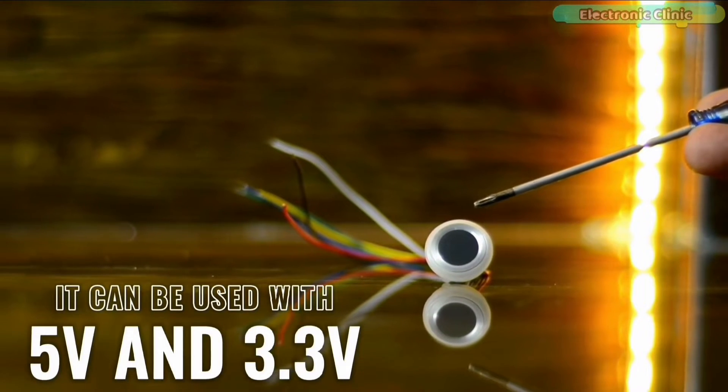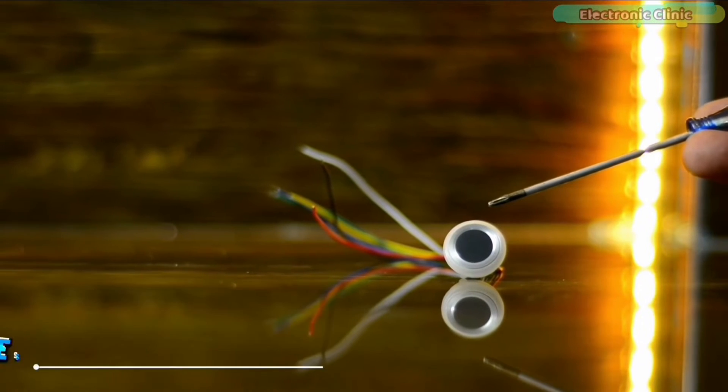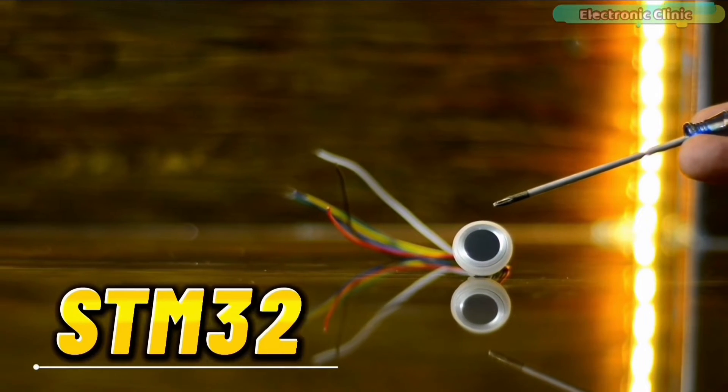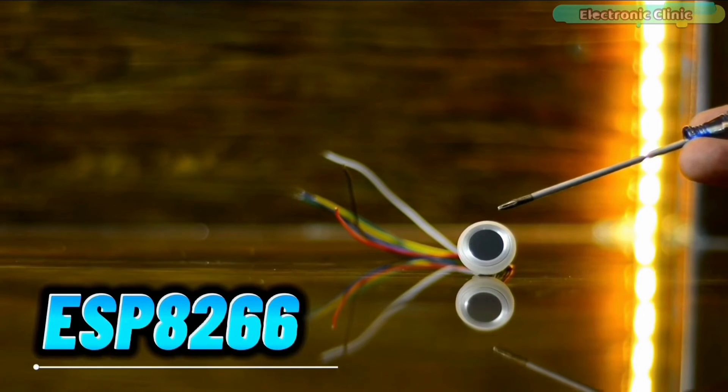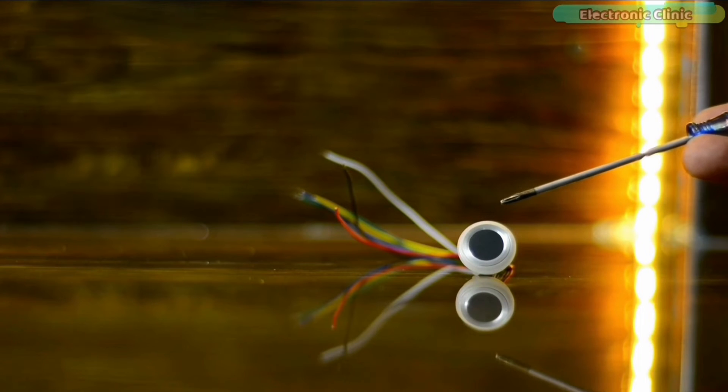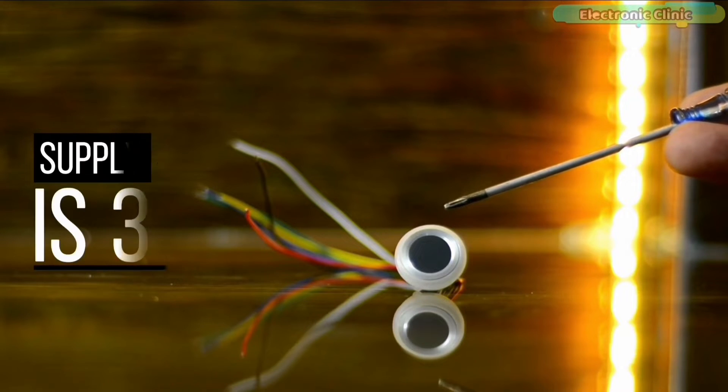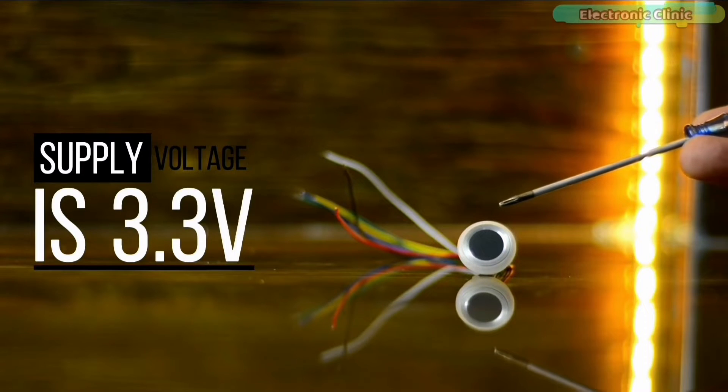It can be used with 5 volt and 3.3 volt compatible controller boards like Arduino, ESP32, STM32, ESP8266, Raspberry Pi Pico and so on. With this capacitive fingerprint sensor, you can easily integrate biometric authentication into your projects.